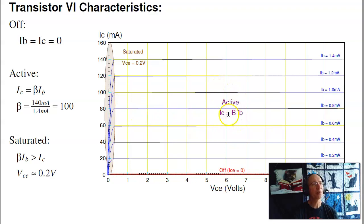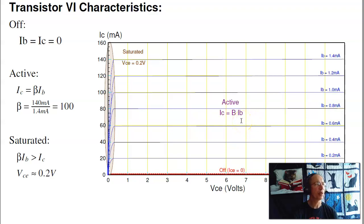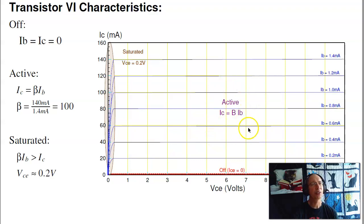That's the three regions. In the active region you can find the gain — it's just the ratio. When the base current is 1 milliamp, the collector current is 100 milliamps. That's 100 to 1, so the current gain beta is 100. Some textbooks use HFE, some use beta — what I'm using uses beta. When the base current is 1.4 milliamps, I have 100 times that for the collector. When it's 0.4 milliamps, it's 100 times that. The current gain beta is set by the doping in the base and emitter region.